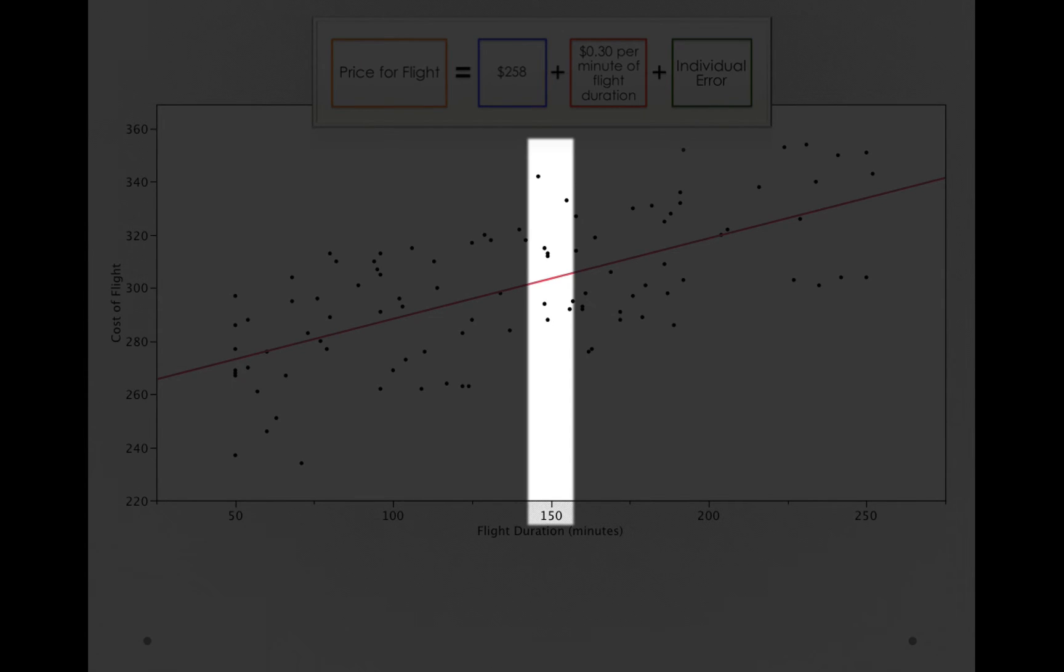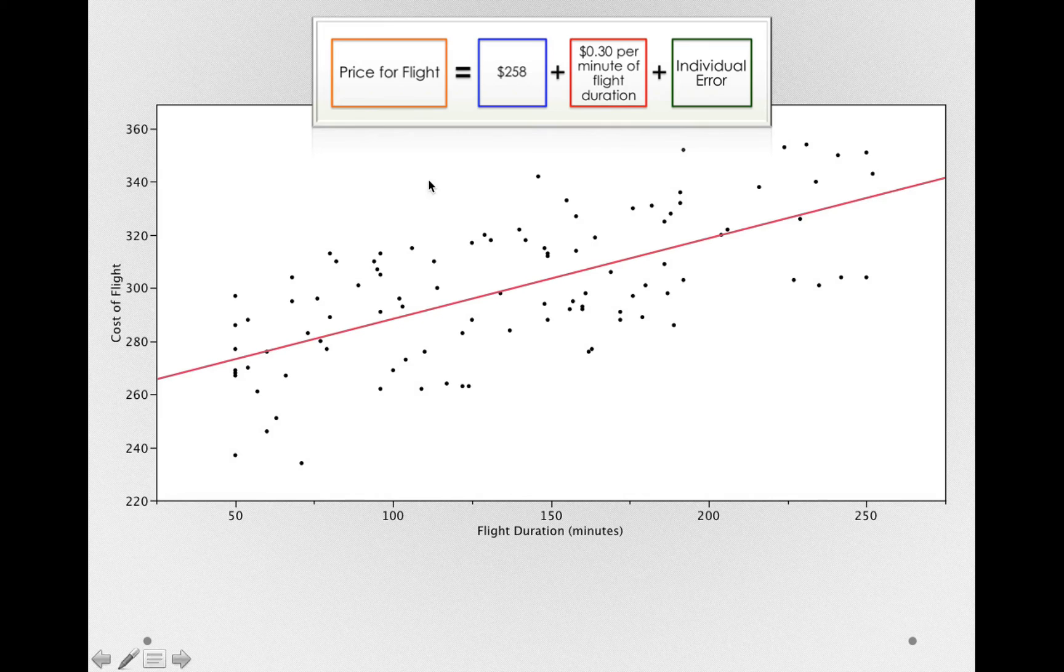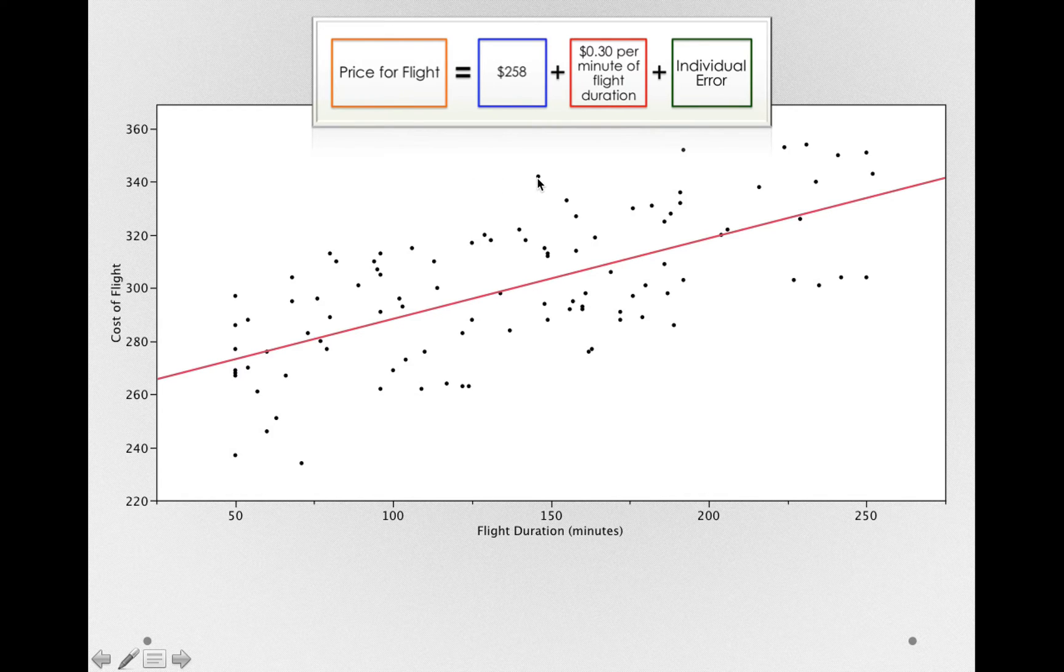That is, there's individual error. One of these people, let's just take this person up here at 150, and this line would make a prediction for how much their flight should cost. But they're deviating from that average trajectory. The person has individual error.